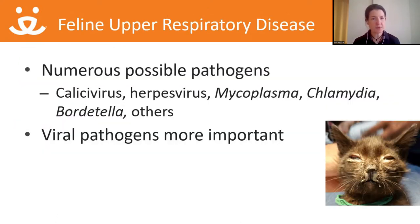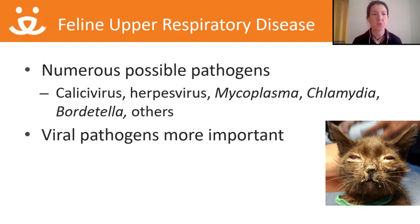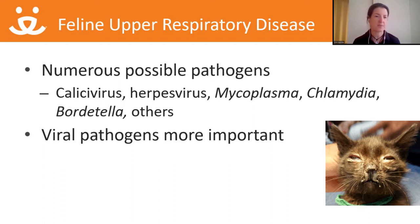Feline upper respiratory disease has a number of possible pathogens, including calicivirus, herpes virus, mycoplasma, chlamydia, and bordetella — the same bordetella that affects dogs — as well as others. However, 80 to 90% of shelter URI is caused by just herpes and/or calicivirus. Those two viral pathogens play a much bigger role than the bacterial agents, though the bacterial agents are still important.